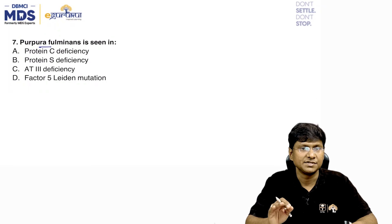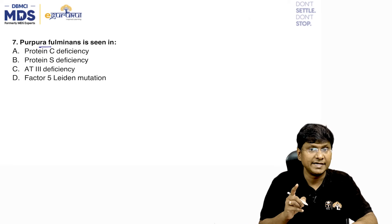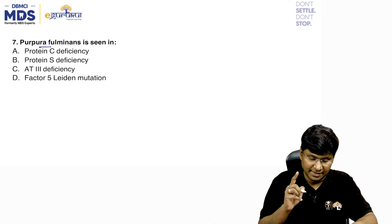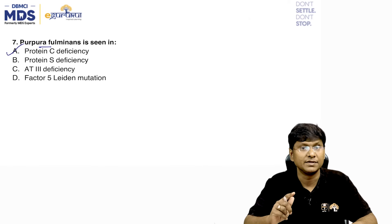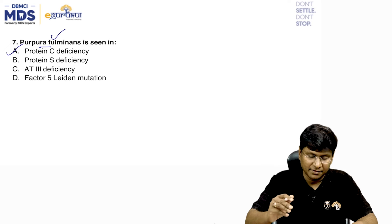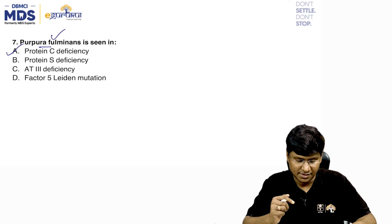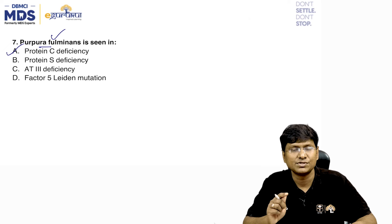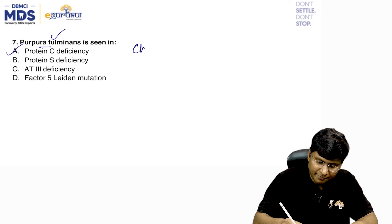Next question: purpura fulminans is seen with which — protein C deficiency, protein S deficiency, antithrombin 3 deficiency, or factor V Leiden mutation? Purpura fulminans is observed in protein C deficiency. It is a severe form of disseminated intravascular coagulation resulting from thrombosis of extensive areas of the skin.